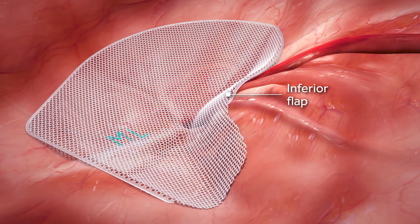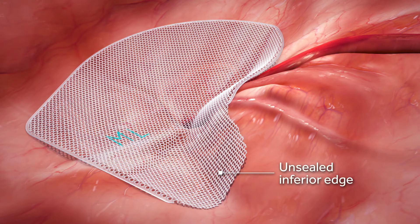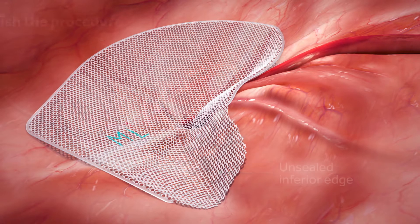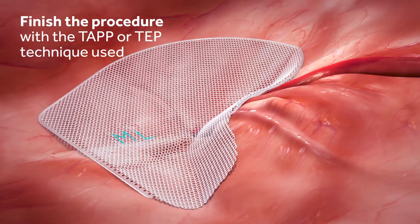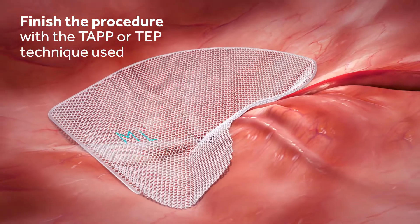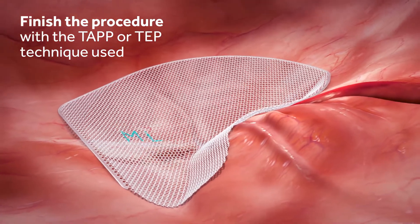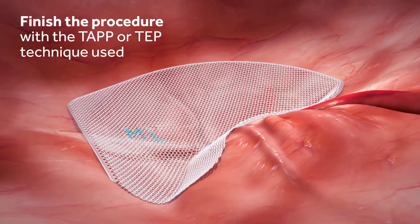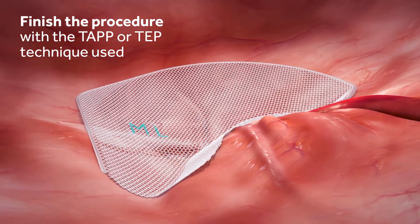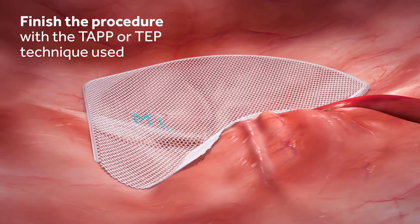Confirm positioning by ensuring the medial edge overlaps the patient's midline. Gently direct the inferior flap laterally to align with the anatomy, and guide the unsealed inferior edge down to the retropubic space.